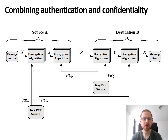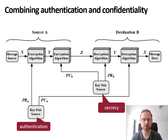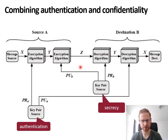As you can see in this figure, authentication and confidentiality can also be combined into a single system. Here, two key pairs are used: a key pair generated by the source for authentication, and one generated by the destination for secrecy or confidentiality. We use A's private key to encrypt a message for authentication, and B's public key to encrypt it for secrecy. B then uses the other two keys to perform the inverse decryption.